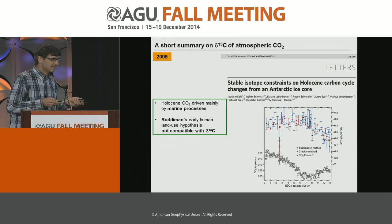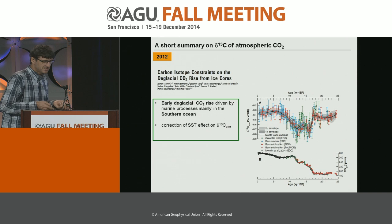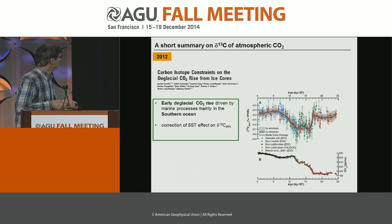With this, we could also rule out the hypothesis that the CO2 increase is due to early land use changes. A few years later, we extended this record through the deglaciation. The main result was that the initial rise and rapid drop in carbon isotopes is actually due to Southern Ocean processes — upwelling, to make a long story short.